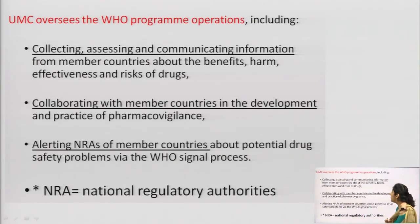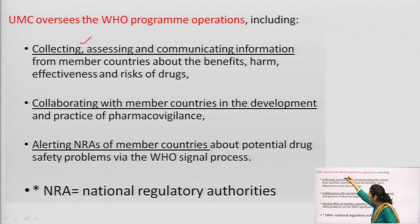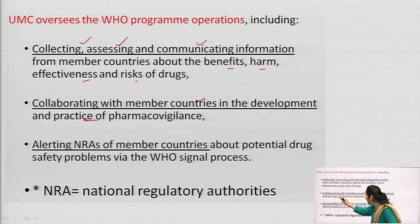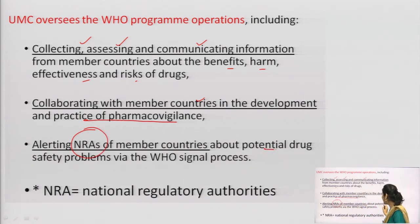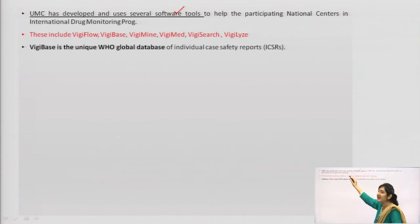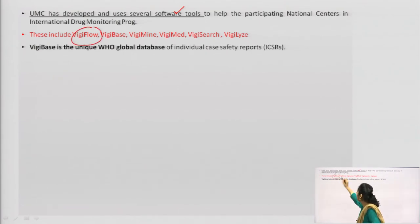UMC oversees the WHO program operations, including collecting, assessing, and communicating information from member countries about the benefits, harm, effectiveness, and risk of drugs. It collaborates with member countries in the development and practice of pharmacovigilance, and alerts national regulatory authorities about potential drug safety problems via the WHO signal process. UMC has developed several software tools to help participating national centers in the international drug monitoring program.